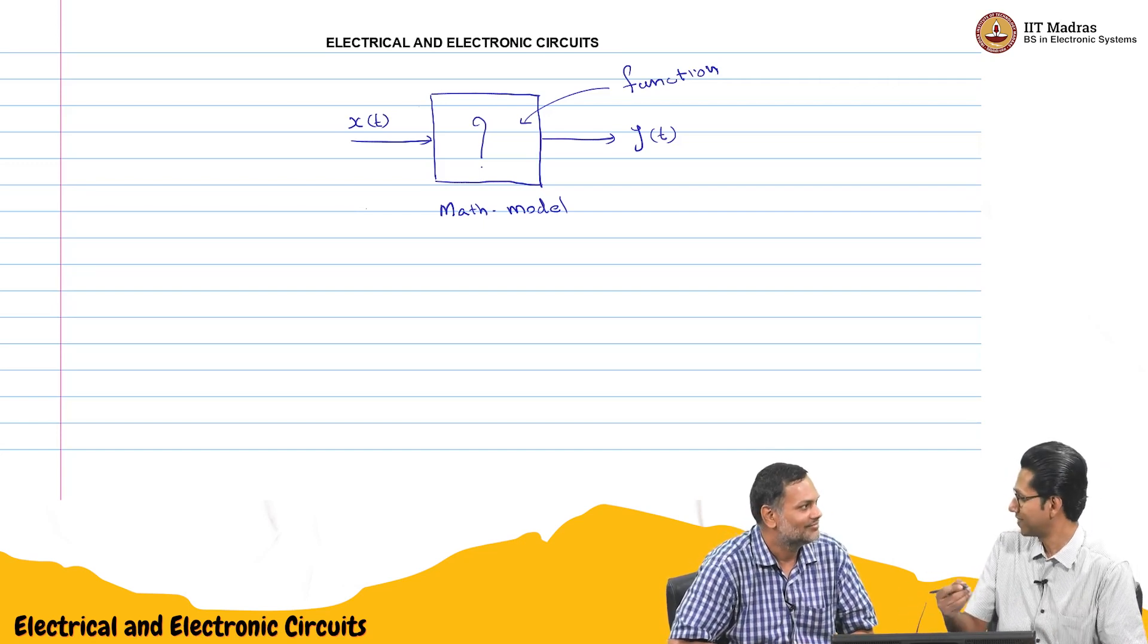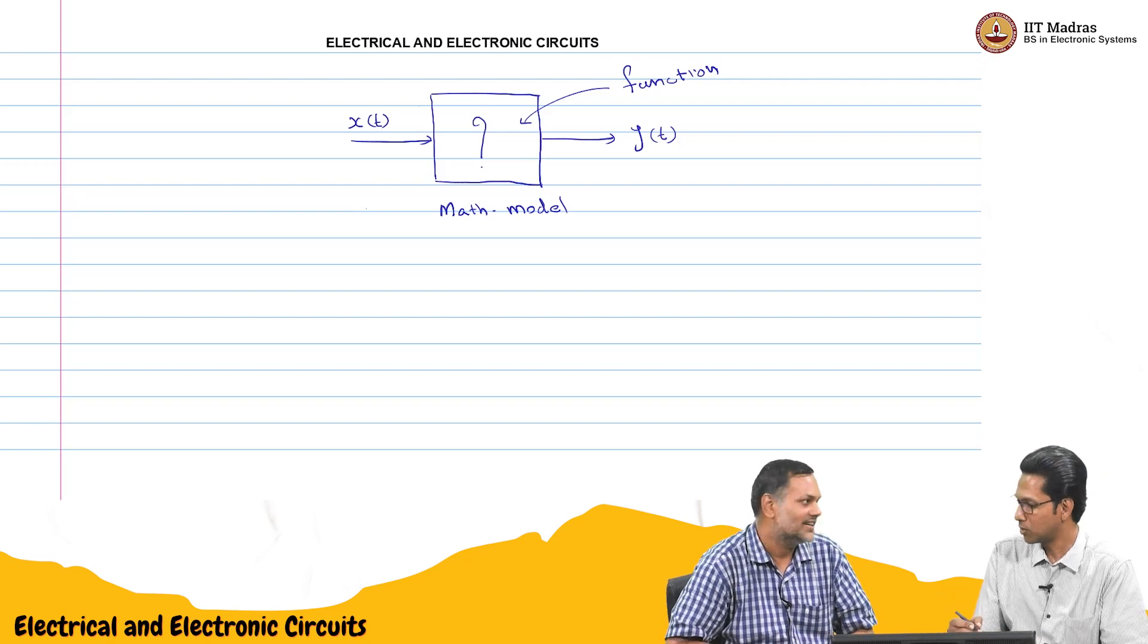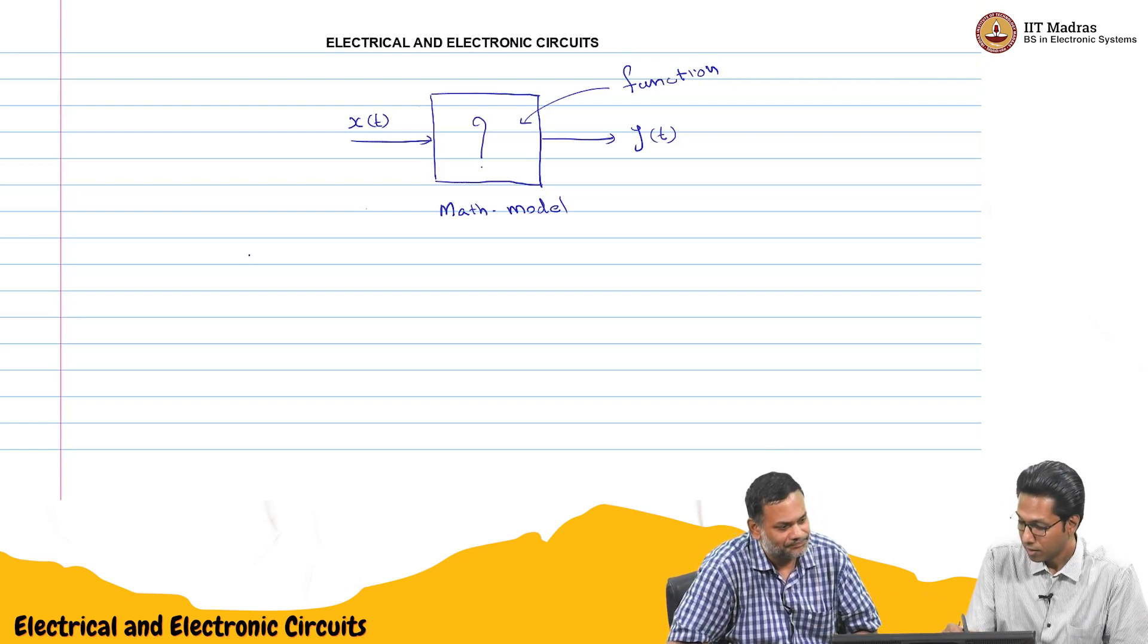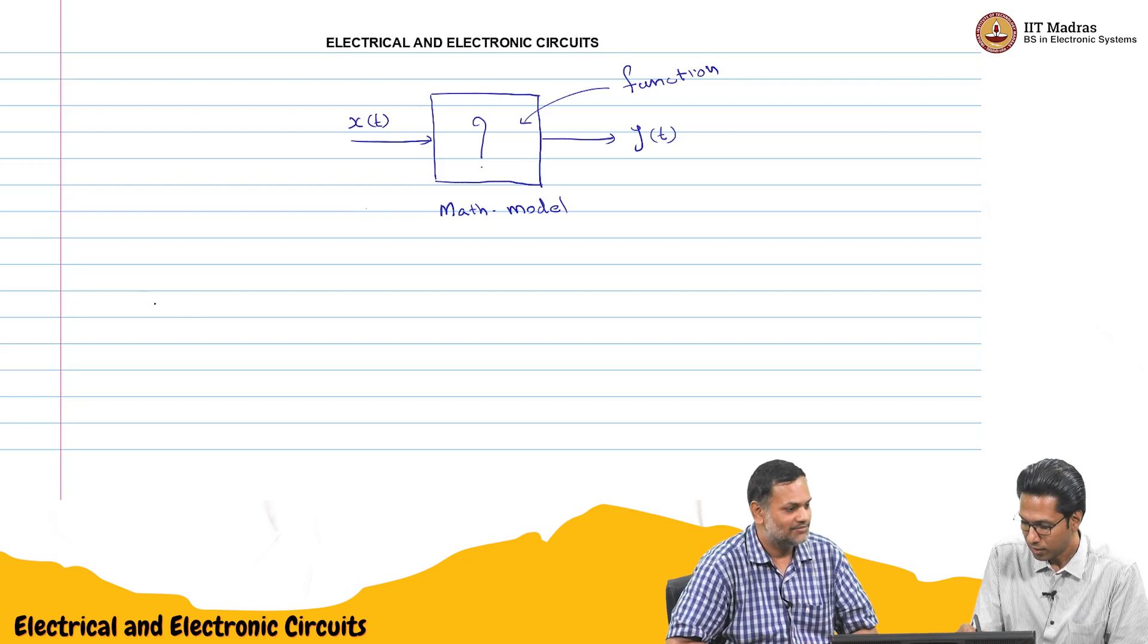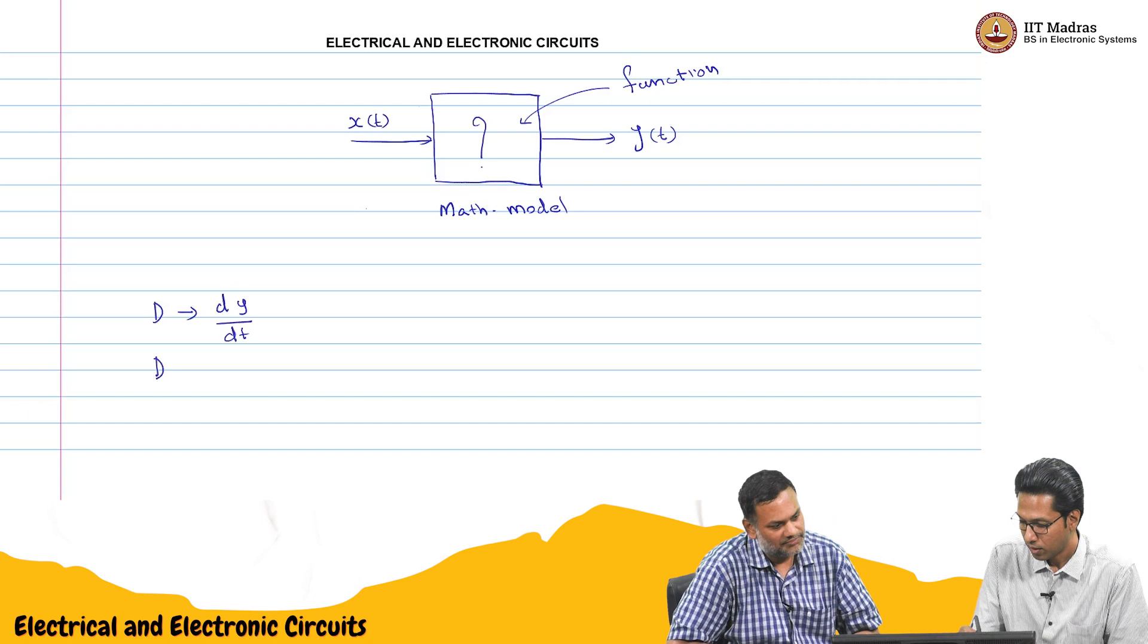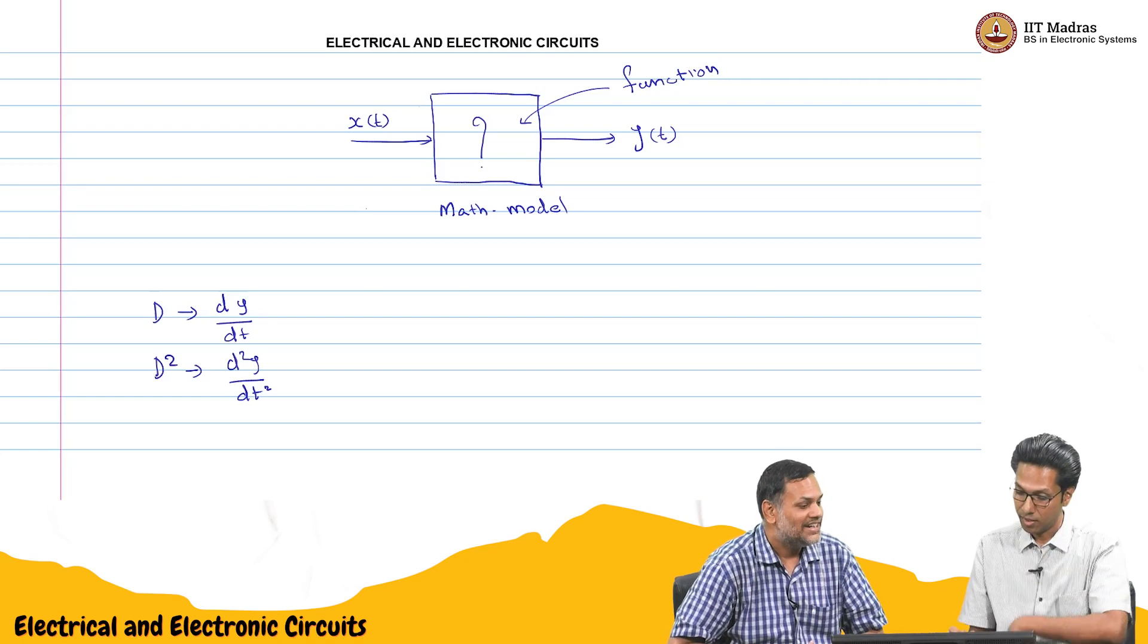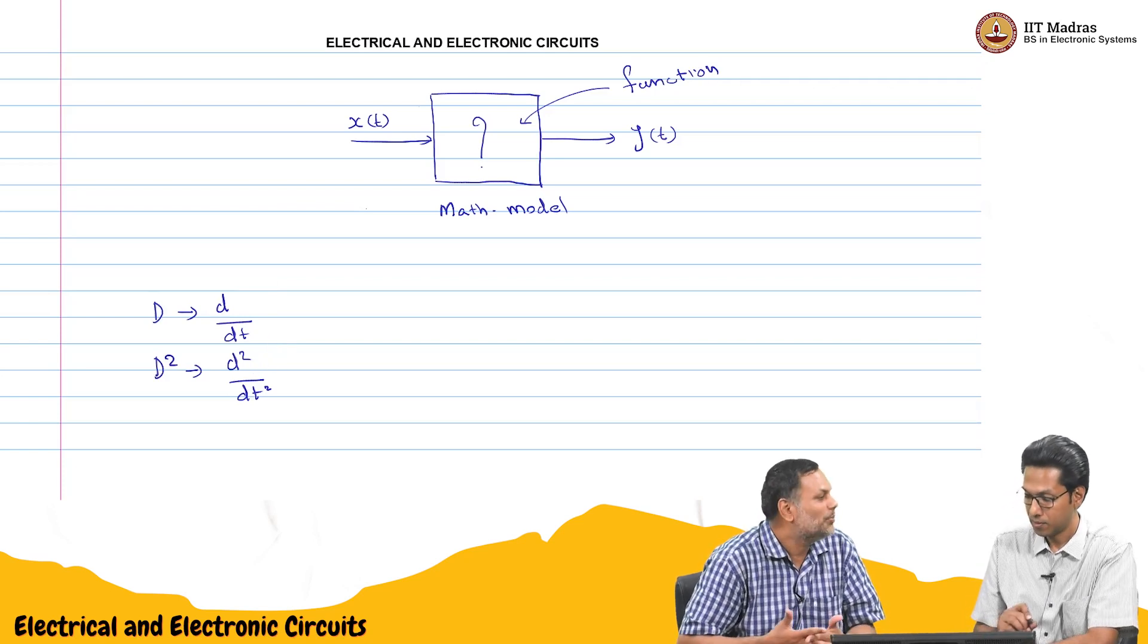So if you want to maybe reproduce that kind of differential equation, it has got some order depending on the number of storage elements it has. We will write maybe a standard equation that represents this. Maybe instead of dy by dt or dx by dt, I will just use d, capital D. So I will just use d, maybe that indicates dy by dt. Or if it is d square, that indicates d square y of t by dt square. So it is an operator. Actually the y need not even be there. So d times y would be dy by dt. It is an operator. Exactly.